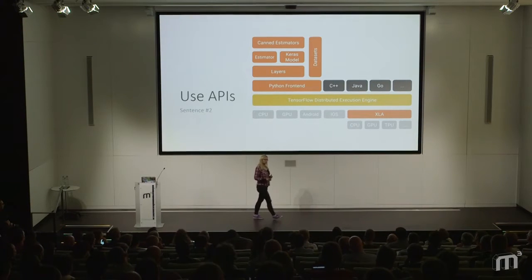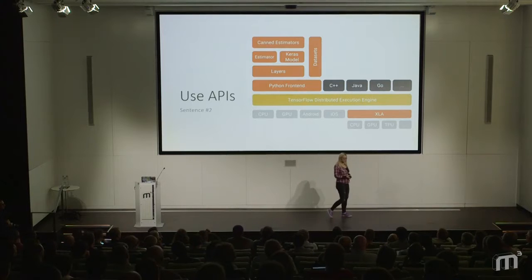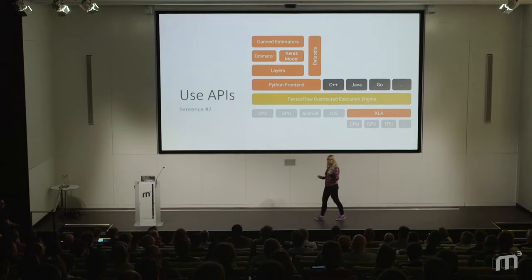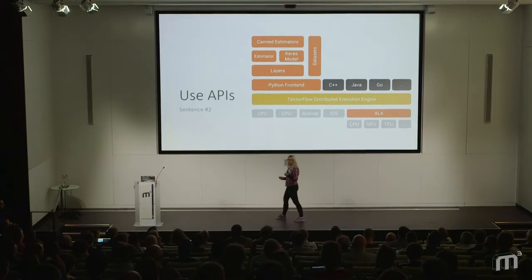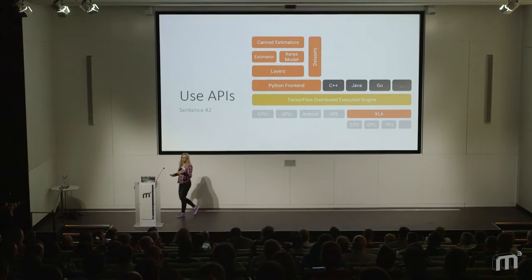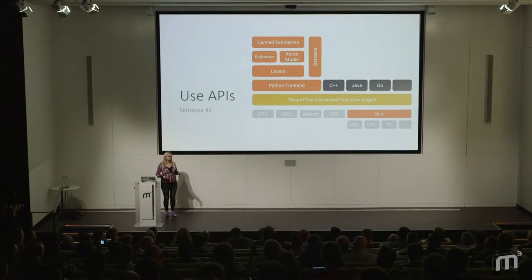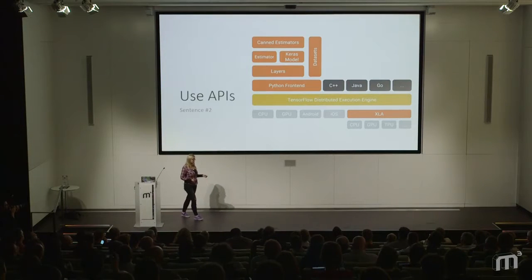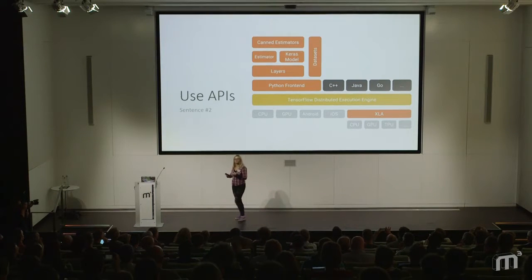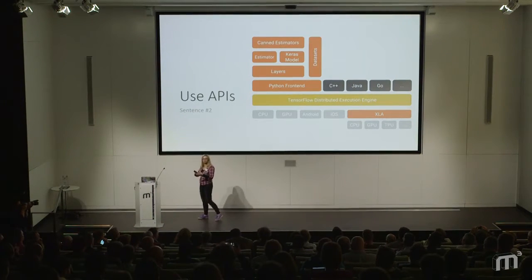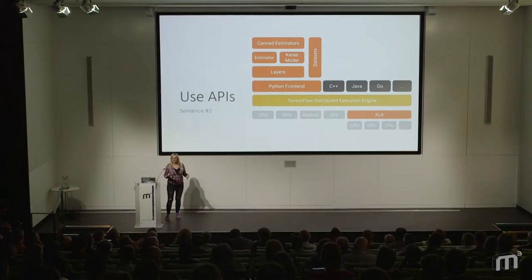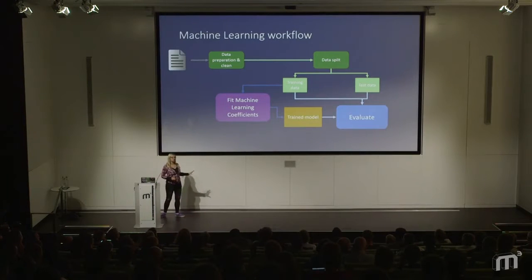The second concept: once we have our computational graph, pick your level of abstraction. You've seen a little bit of it. If you've never seen TensorFlow before, it could be a little confusing. Sometimes you want to tweak the optimization algorithm. Sometimes you want to build your actual layer. And sometimes you want to use something very, very high level.